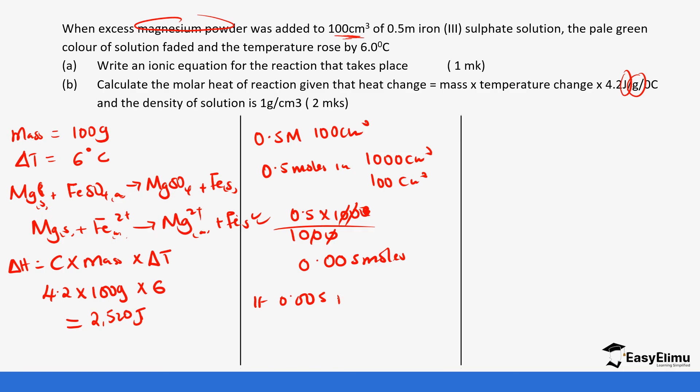So if 0.05 moles produces 2,520 joules of energy, what about 1 mole? Which is the same as 2,520 joules divided by 0.05 which gives us 50,400 joules per mole. So you have not been told to leave your unit in a certain way, so you can leave it like this. Or we divide by 1000 to give you 50.4 kilojoules per mole.